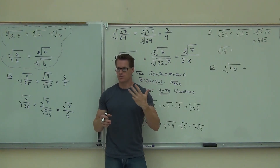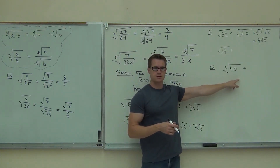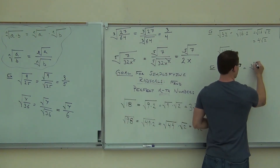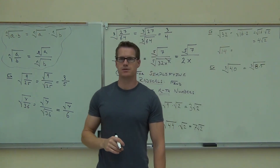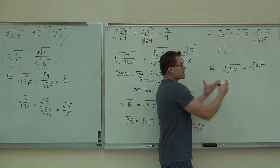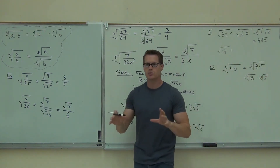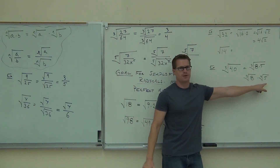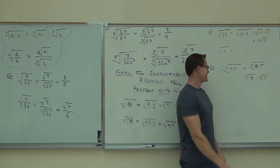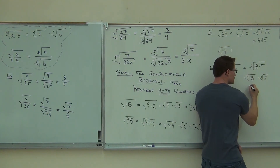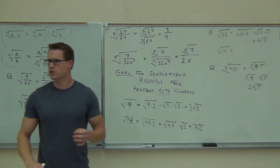Do any of those four numbers — 8, 27, 64, 125 — divide 40? 8 does. 8 times 5 gives us 40. So if we have a cube root of 8 times 5, we can split that up: cube root of 8 times cube root of 5. Don't lose that cube root — this is a cube root and it will stay a cube root. What's the cube root of 5? You can't simplify that. What's the cube root of 8? It's 2. So we get 2 times cube root of 5. The cube root of 8 is 2, and we cannot simplify cube root of 5.